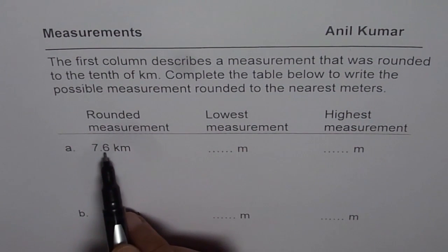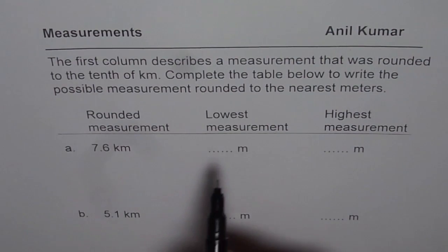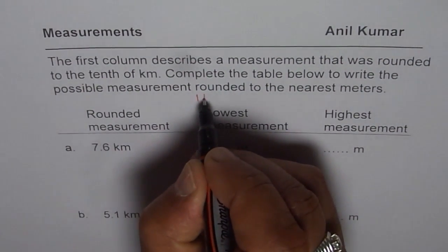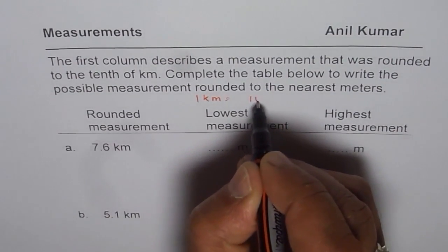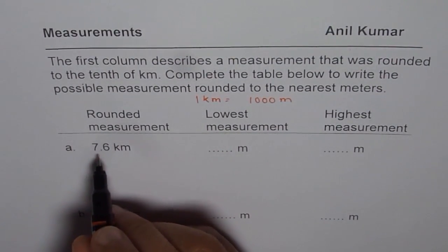7.6 kilometer, a number which can round to 7.6 could be 7.59, 7.55 also, right? Converting to meters is basically times by thousand. One kilometer, as you know, is 1000 meters.